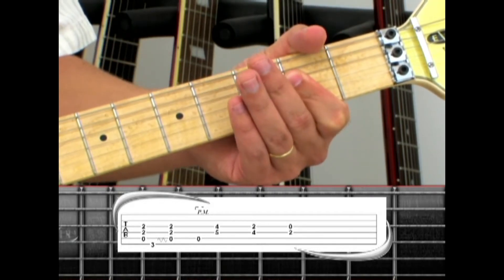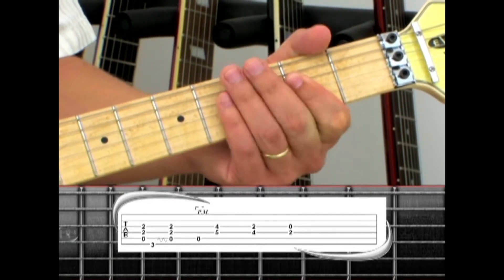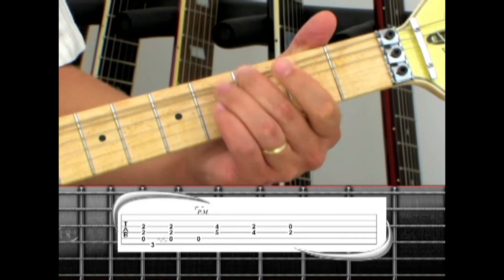To a G note on the 6th string 3rd fret, give it a quick bend, then return to the A5. A5, G, A5.